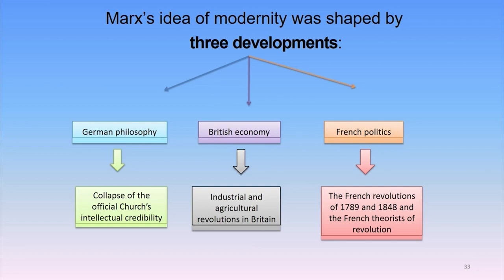Marx's idea of modernity was shaped by three developments: one, German philosophy; two, British economy; three, French politics — namely the French revolutions of 1789 and 1848 and the French theorists of revolution. As far as British economy is concerned, the industrial and agricultural revolutions in Britain and the British economists who theorized them. As far as German philosophy is concerned, the collapse of the official churches' intellectual credibility as reflected in German philosophy.